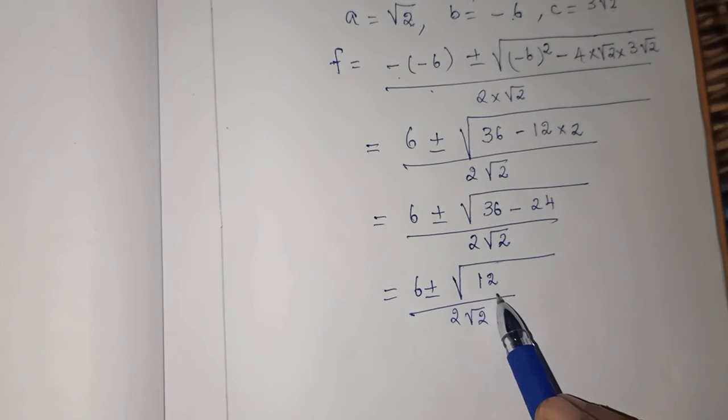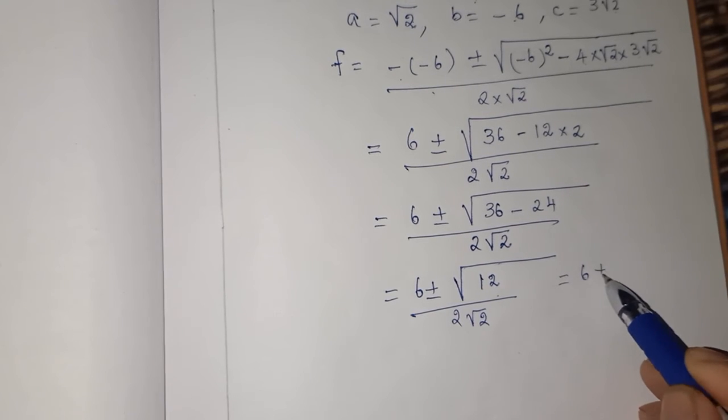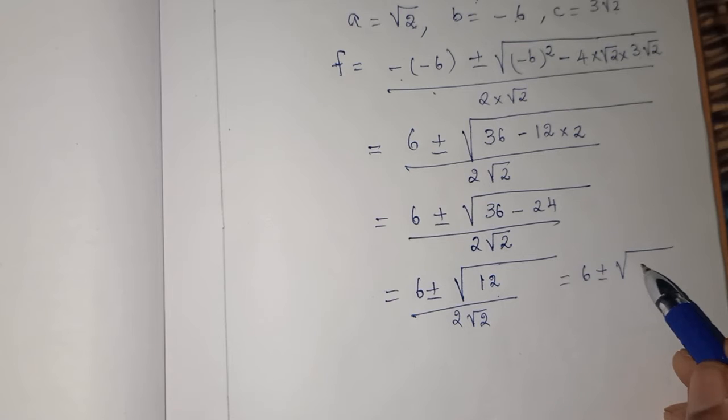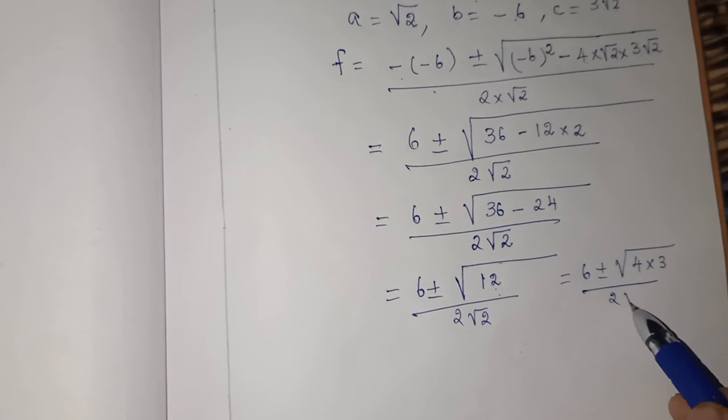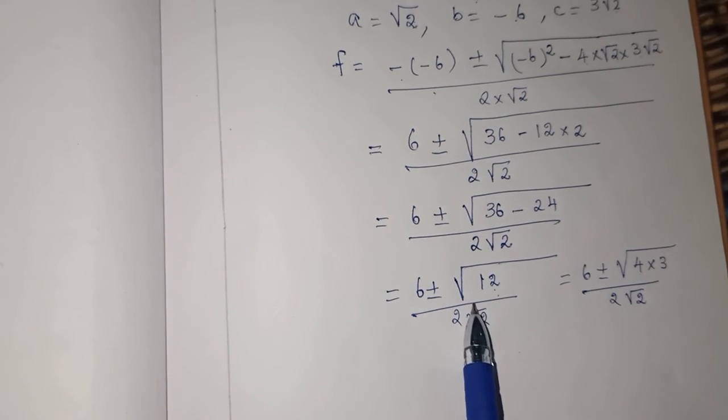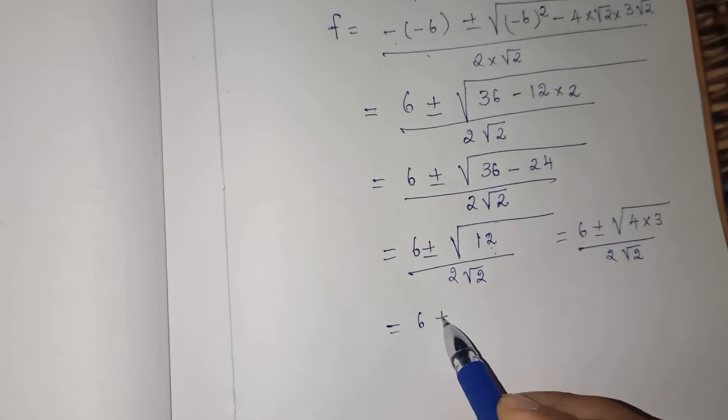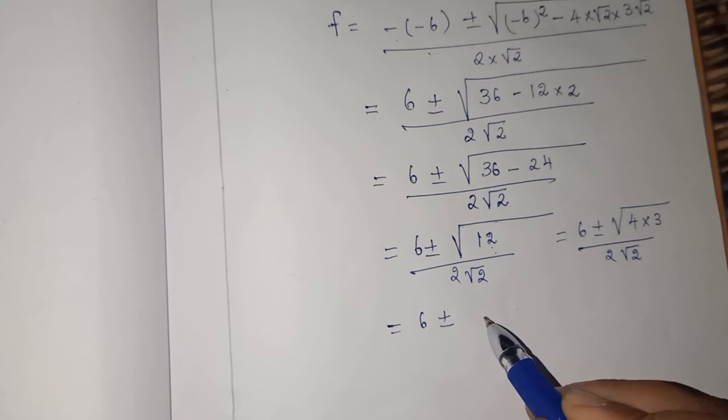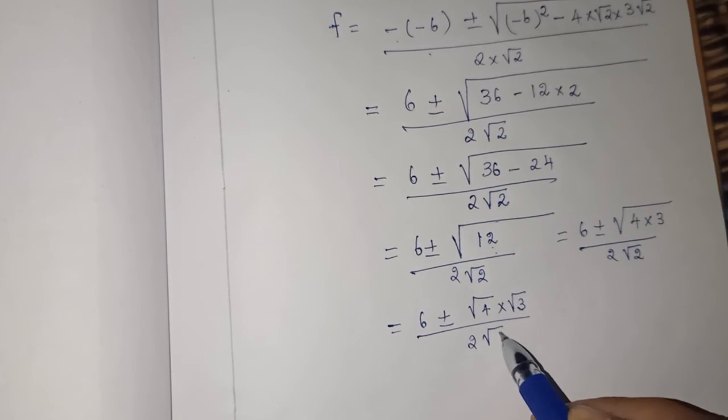How will you split √12? √12 can be factorized. How will you write 12? There is a perfect square inside. You can write it as 4 × 3. You have to think and do. This is simplification. So 6 ± √(4 × 3) can be split into √4 × √3 divided by 2√2.